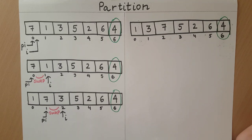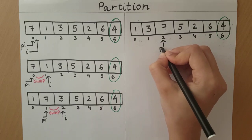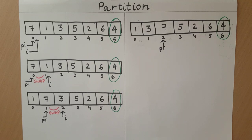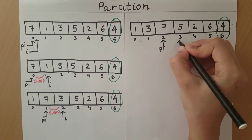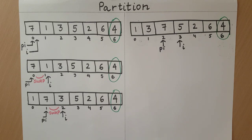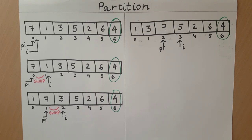Once we have swapped the elements at PI and I, we have to increment PI by 1. When we increment PI by 1, PI will now equal 2. Now that we have swapped the two elements and incremented PI, we can start checking for the next element of the array by incrementing I by 1. The element at I is 5. If we swap the element at PI and the pivot, 4 will come over here. When 4 comes over there, 5, which is greater than 4, will appear to its right. Therefore, the element at I does not violate the condition that PI is the correct index.